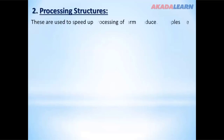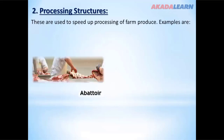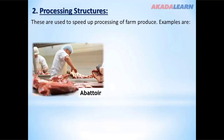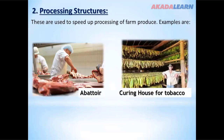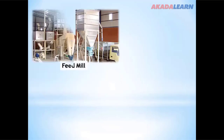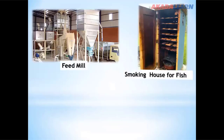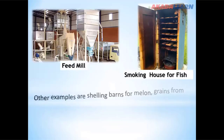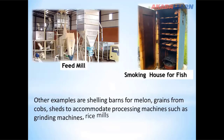Processing structures are used to speed up the processing of farm produce. Examples include the abattoir, curing house for tobacco, feed mill, and smoking house for fish. Other examples include shelling sheds for grain and sheds to accommodate processing machines such as grinding machines, rice mills, and many more.